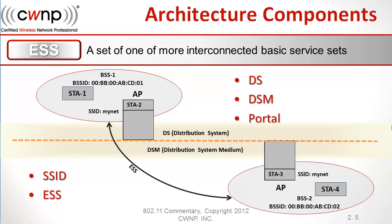The service set identifier, or SSID, is this common name. It is the simplest thing that allows client stations to roam from one BSS to another. Because they have a shared SSID, the client stations know they can roam between these different BSSs.